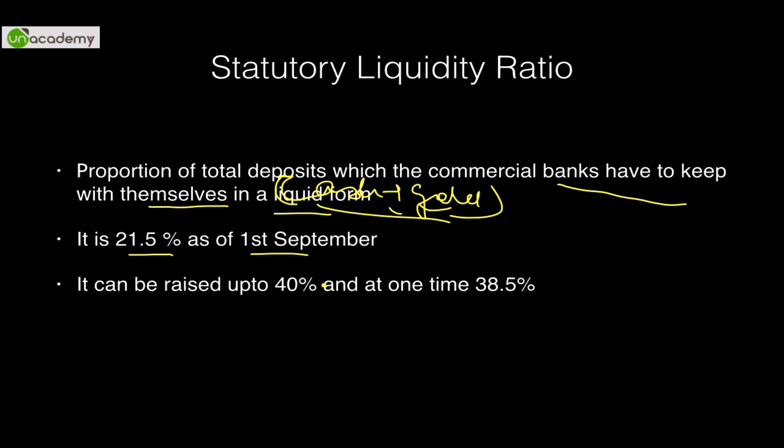Discussing the impact of CRR and SLR: a raise in CRR and a raise in SLR would increase the rates that will be parked as funds with the RBI (in terms of CRR) or with themselves by commercial banks (in terms of SLR). If those funds are blocked, they cannot be used to lend out to the people as loans. If those funds cannot be lent out as loans, it would automatically lead to reduction in credit supply in the market. Hence, if RBI increases CRR or SLR, it would reduce the money supply in the market, leading to reduction in inflation.